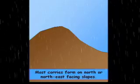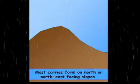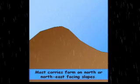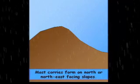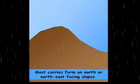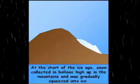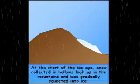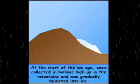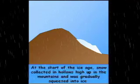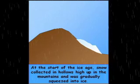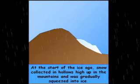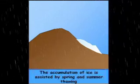Most corries form on north to northeast facing slopes. Decreasing temperatures at the start of the ice age means that snow collects in hollows high up on the mountainside. Over time, this is gradually squeezed into ice.